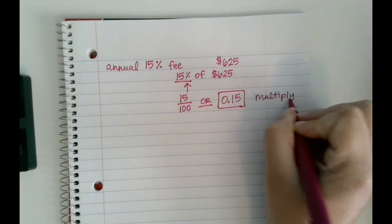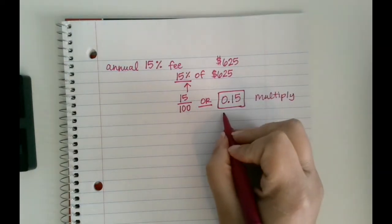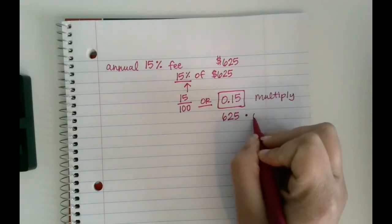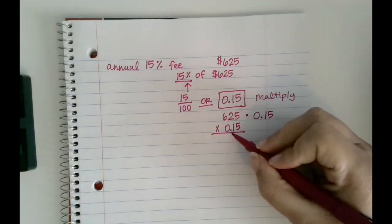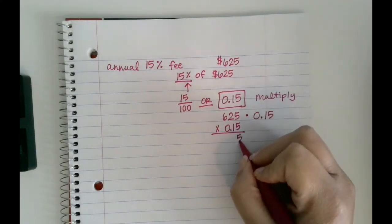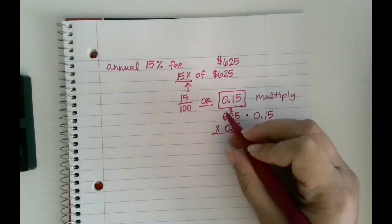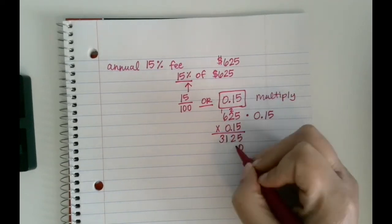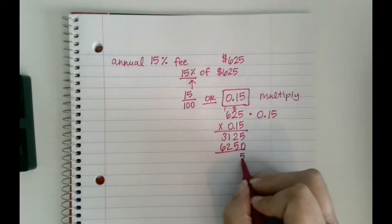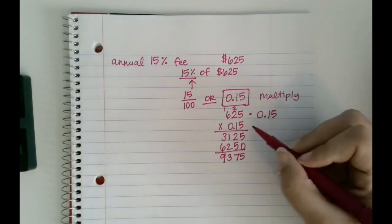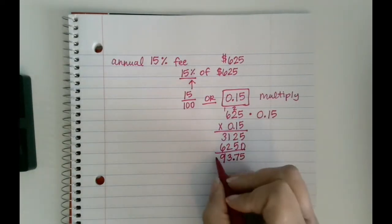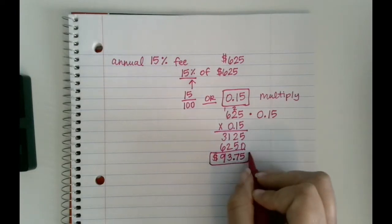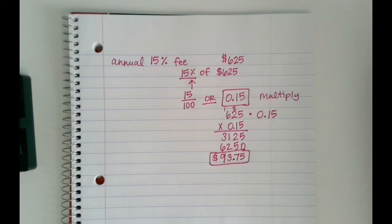So I'm going to do $625 times 0.15. Line up your digits - you don't have to line up decimal points when you're multiplying, you can just line up your digits and multiply like normal. Don't forget to go back and get your decimal point. So there's two digits behind the decimal, so one, two - so that means my fee would be $93.75. And like I said, this is a made-up scenario so that's a pretty high percentage of a fee, but I just want you to see kind of how to do it.